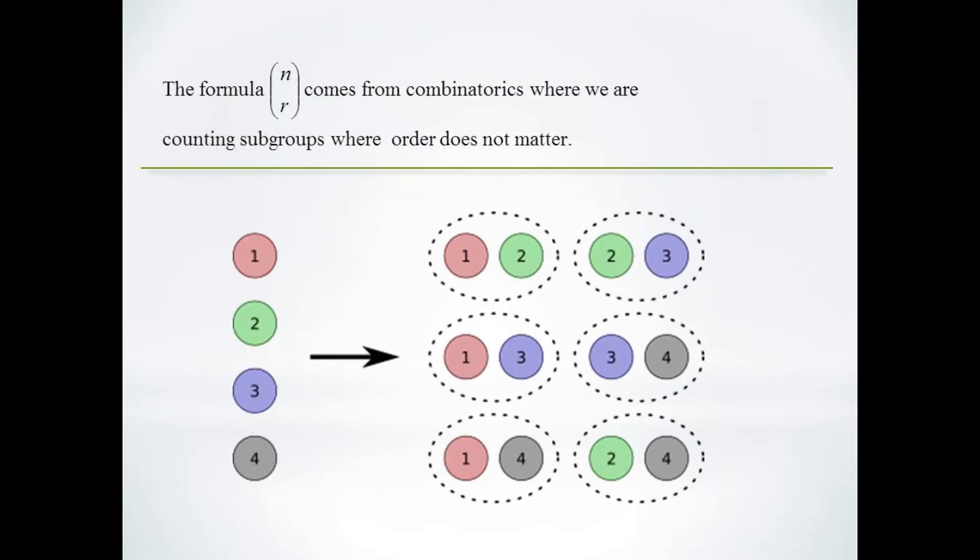The formula n choose r comes from the field of combinatorics, where we use it to determine the number of possible subgroups we can create when order does not matter.